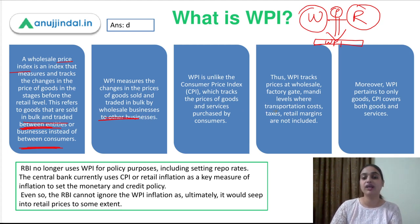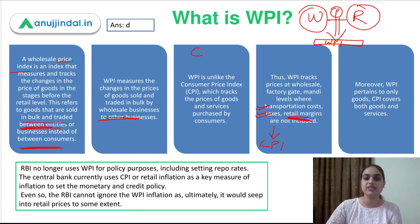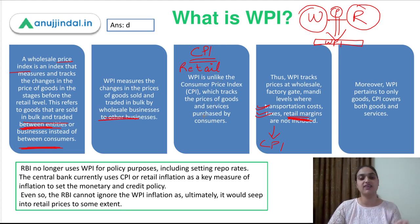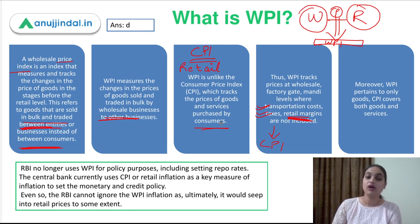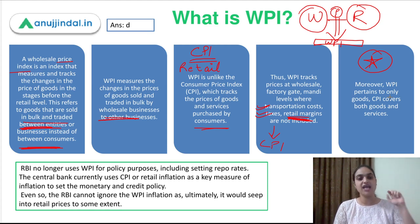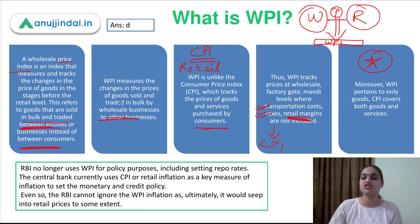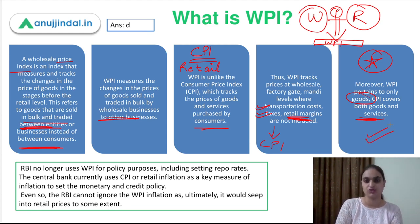In WPI we don't consider the transportation costs, the taxes, or the margin of retailers which are included in CPI. CPI can also be called retail inflation — it is the price level at which goods and services are exchanged among consumers. The major difference between WPI and CPI is that WPI is the price level for wholesalers, whereas CPI is the price level at which goods are purchased by consumers. Moreover, WPI is only restricted to goods, while CPI is for both goods and services. This is the key point which will help you answer this question.